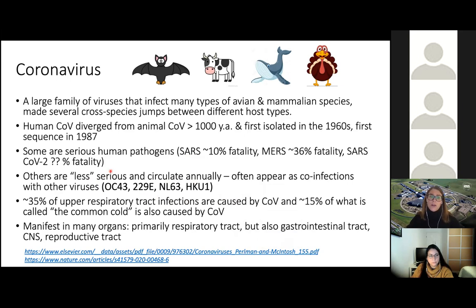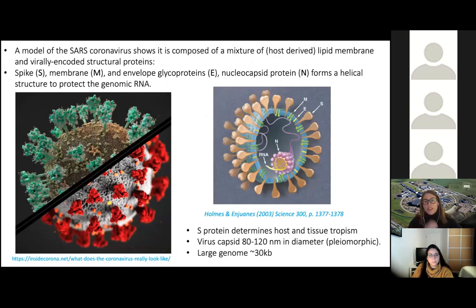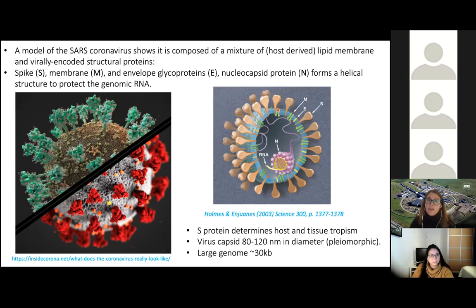Infections manifest in many organs — primarily the respiratory tract, but also the gastrointestinal region, central nervous system, and reproductive tract. Here are models of the SARS-CoV-2 capsid showing how the actual virus looks and how its structure is organized. It is an enveloped virus, meaning it has a host-derived lipid membrane, and embedded in this membrane are a series of virally encoded structural proteins.